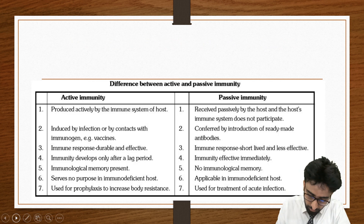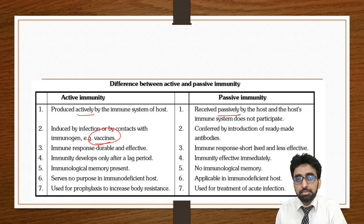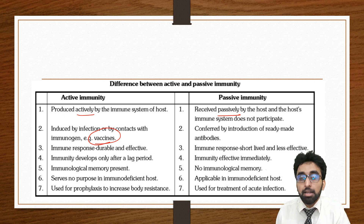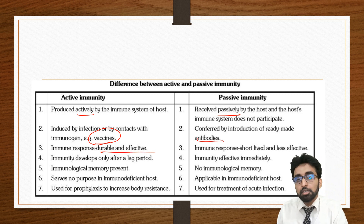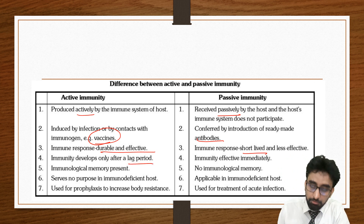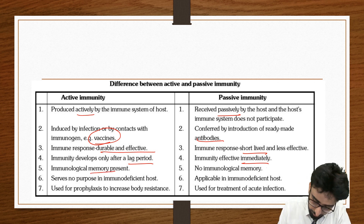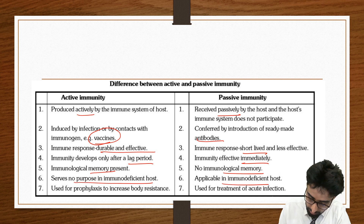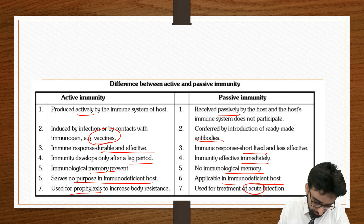An example of active immunity is vaccination — by giving a vaccine you are causing primary exposure and making the body form memory cells. An example of passive immunity is injecting ready-made antibodies. Active immunity is durable and effective because of memory cells, while passive immunity is short-lived. There is a lag period in active immunity due to antibody production time; passive is useful for acute cases. Memory is present in active, absent in passive. Vaccination is used for prophylaxis; passive is used for acute conditions.